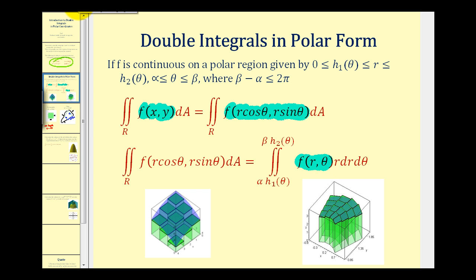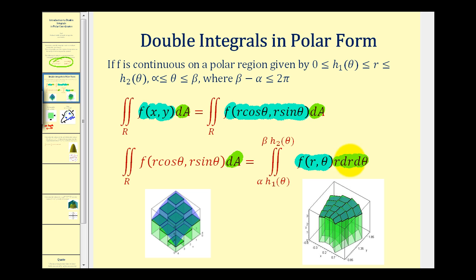There's one more very important thing to notice: differential dA is replaced with r·dr·dθ. So there's an extra factor of r in the integrand when we convert from rectangular to polar form. We'll take a look at why that is in just a minute.